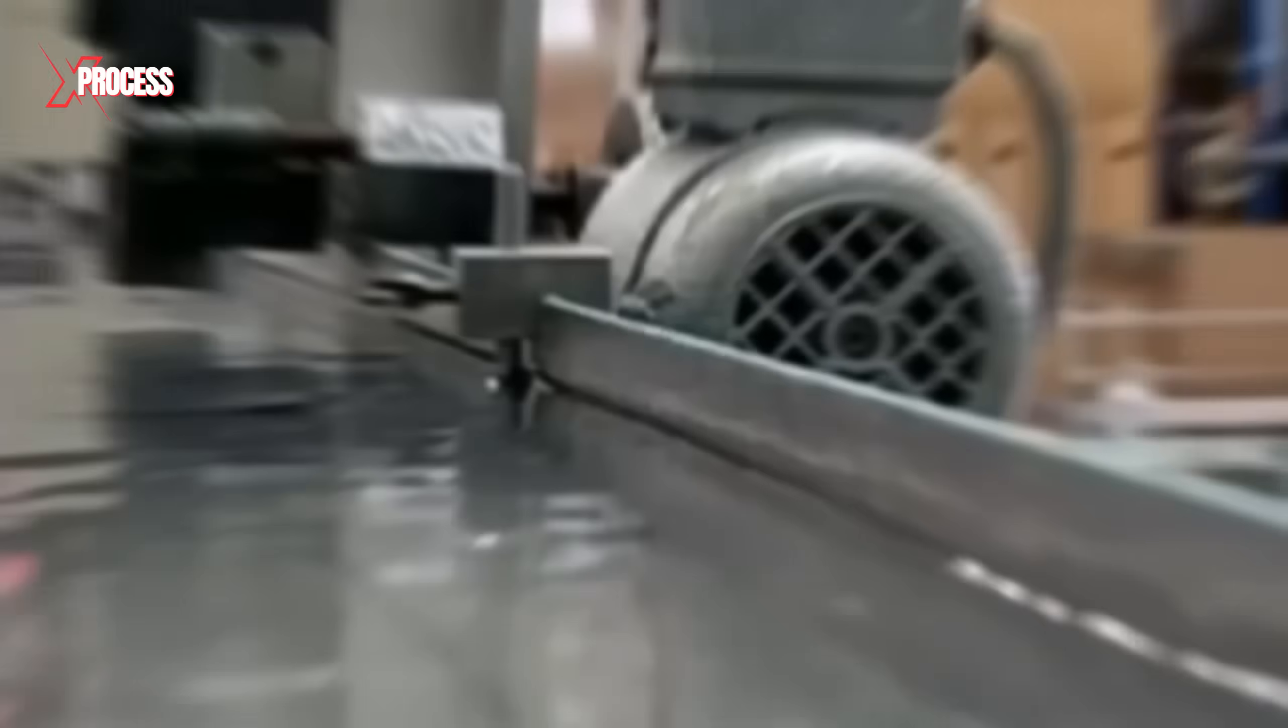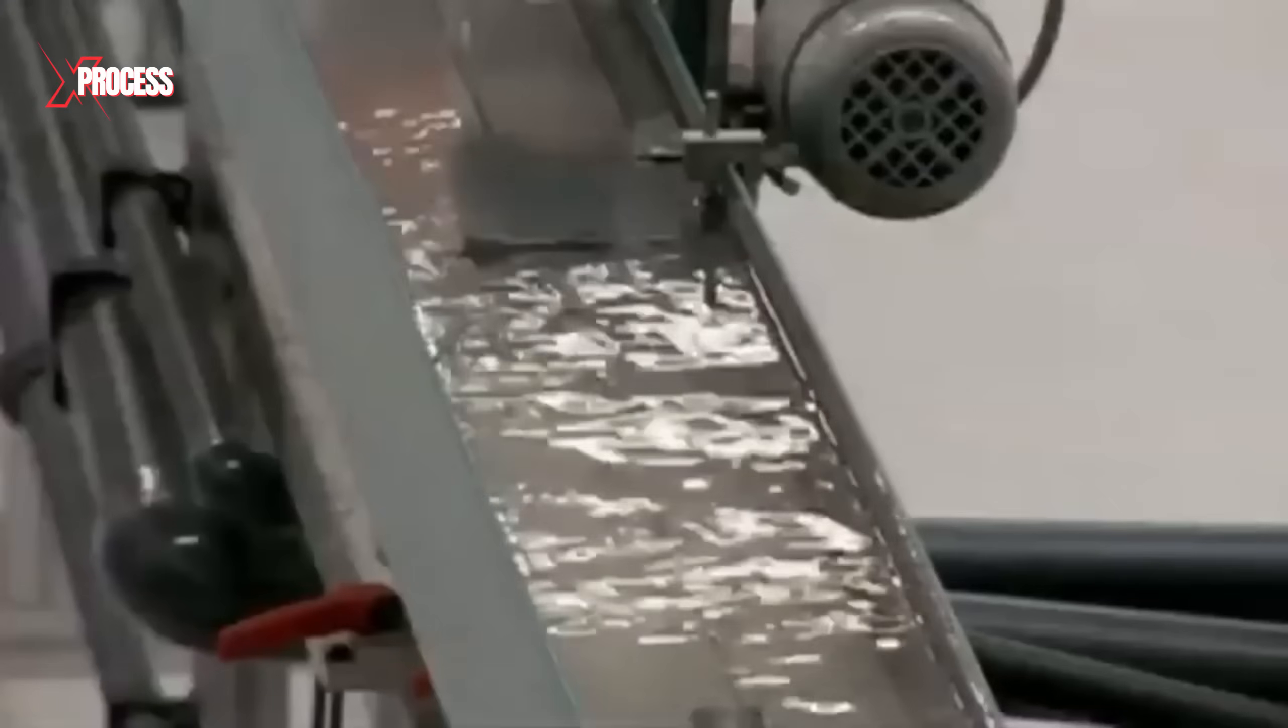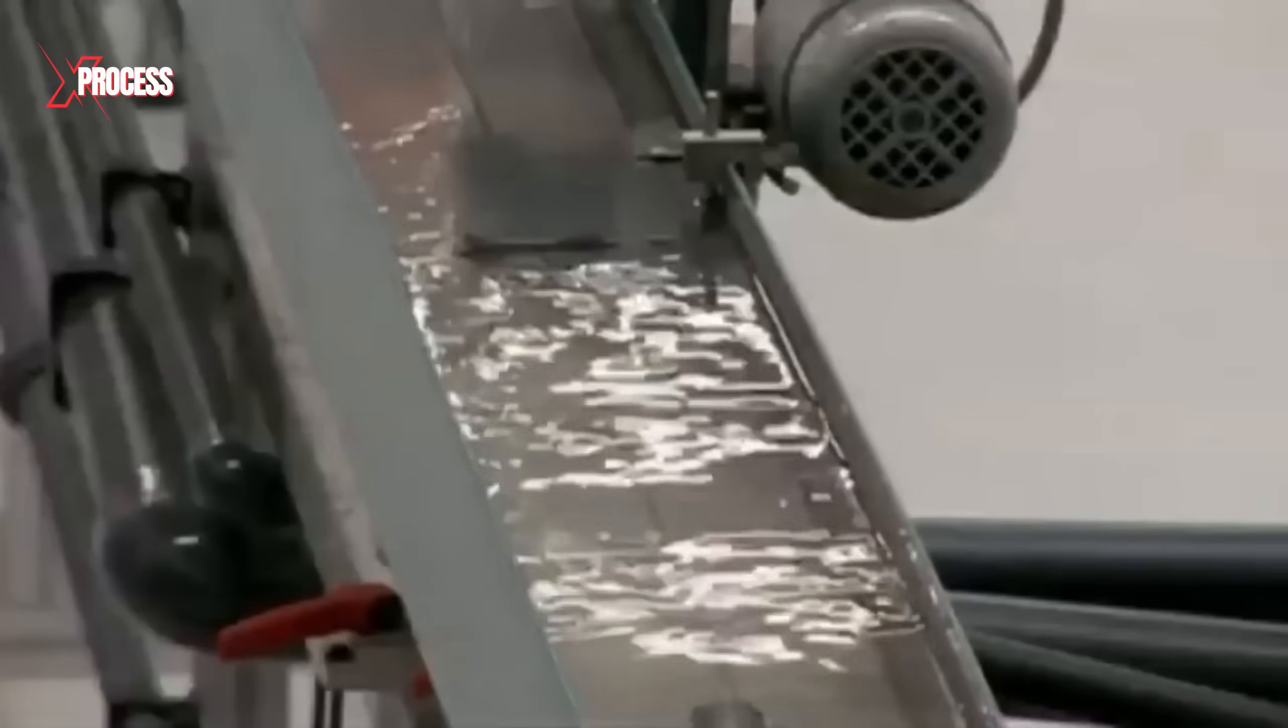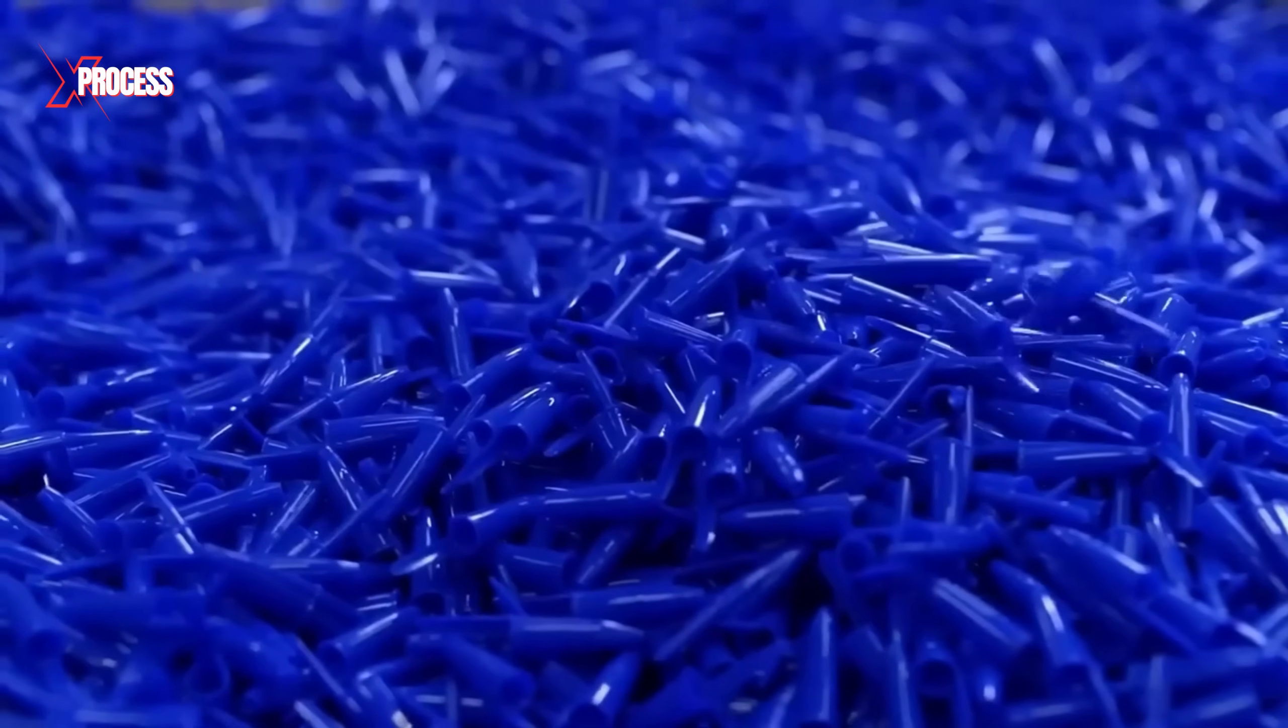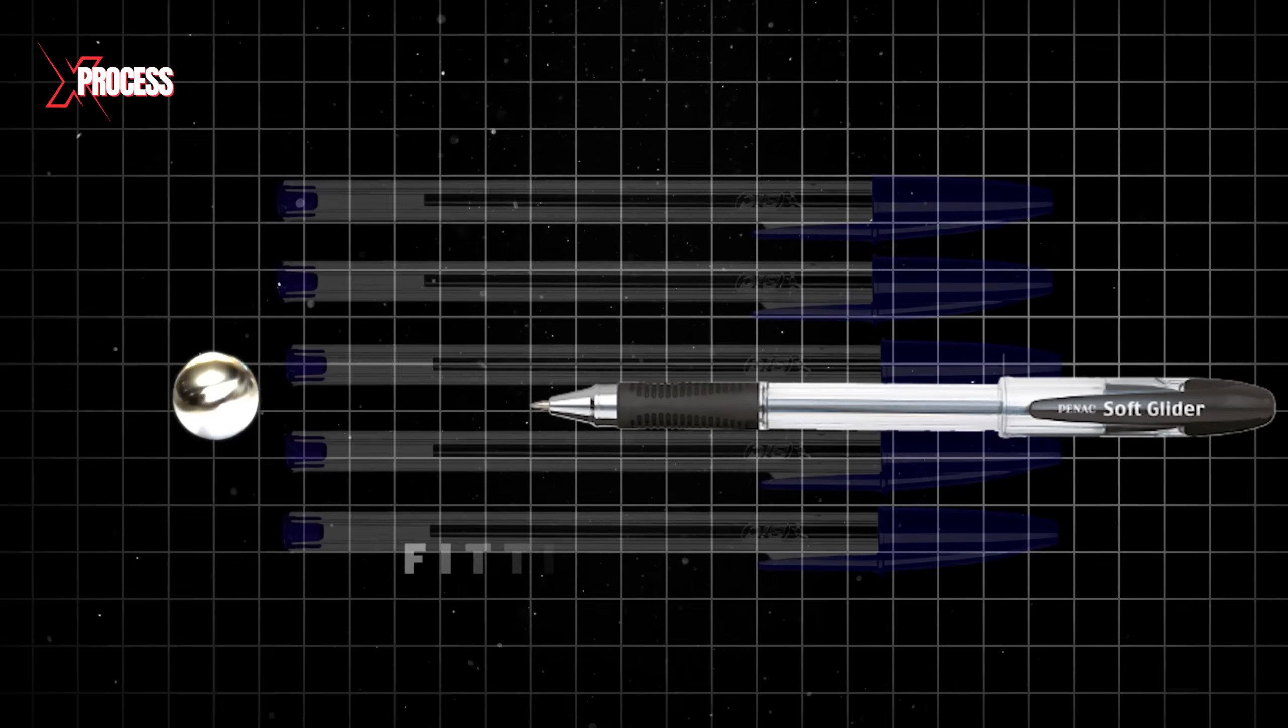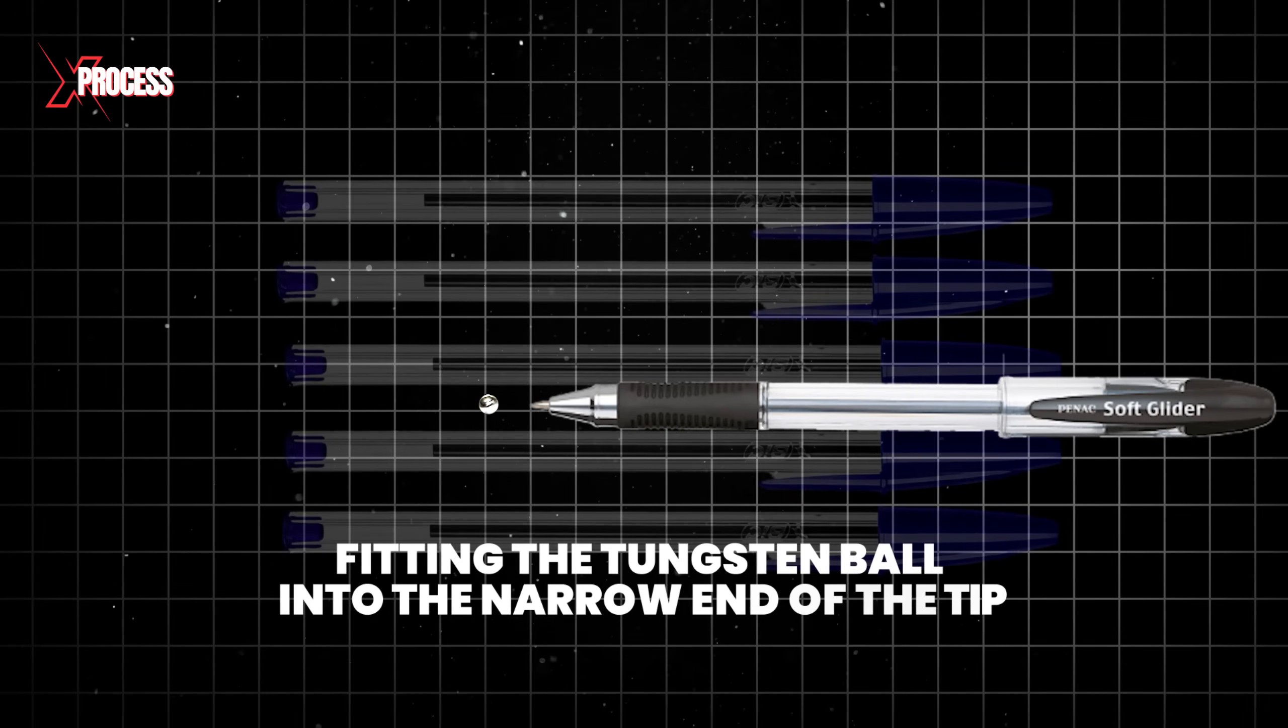Once the shaping process is complete, the pieces are passed through cold water to cool the material. After all the components are formed, the assembly of BIC pens begins. The first step involves fitting the tungsten ball into the narrow end of the tip.